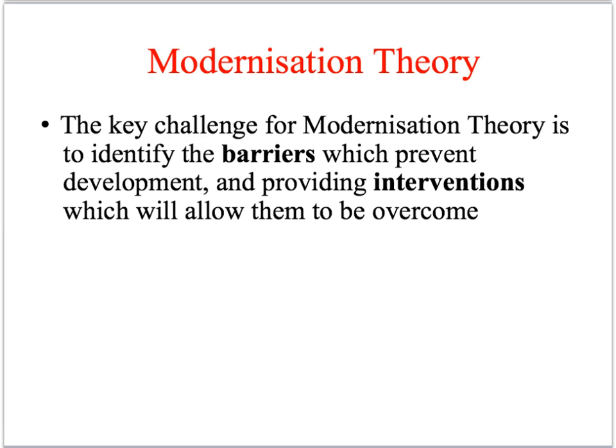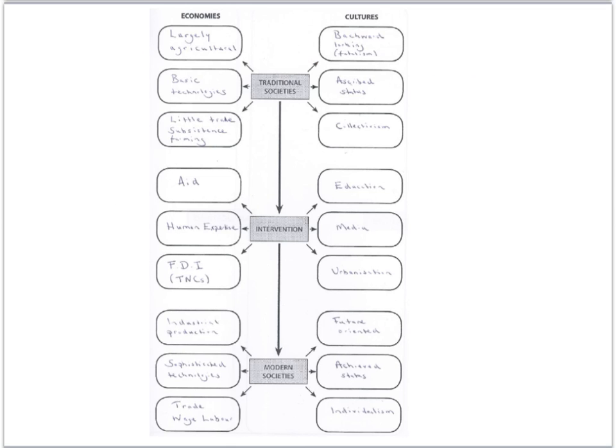Modernisation theorists argue that underdevelopment and global inequalities occur because poorer countries often lack the key ingredients needed to move from one stage to the next. Therefore, the key practical challenge for this perspective is to identify those barriers which prevent poorer countries from developing and then come up with practical interventions which allow them to overcome those barriers.